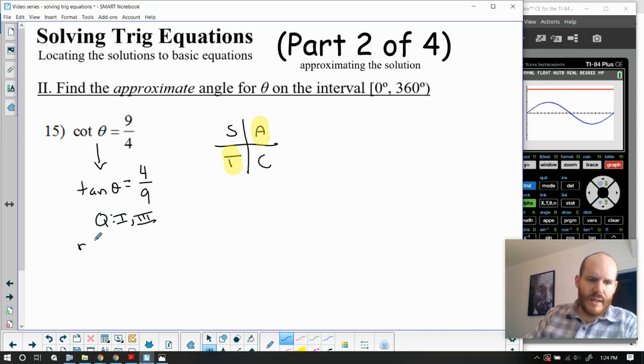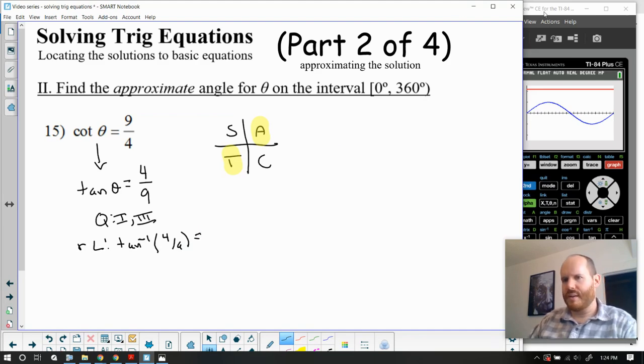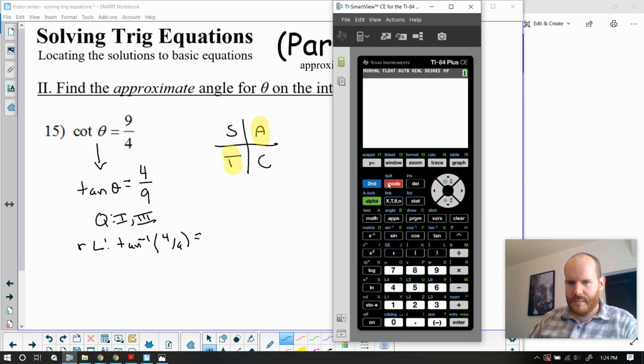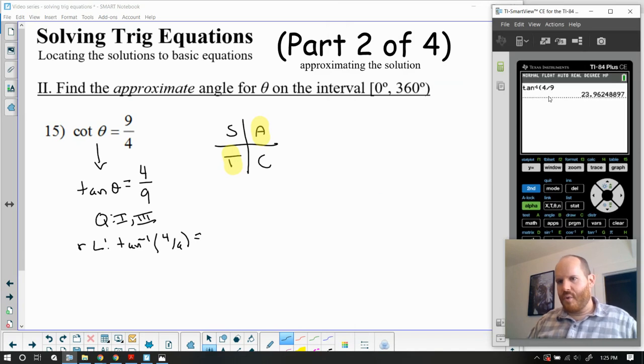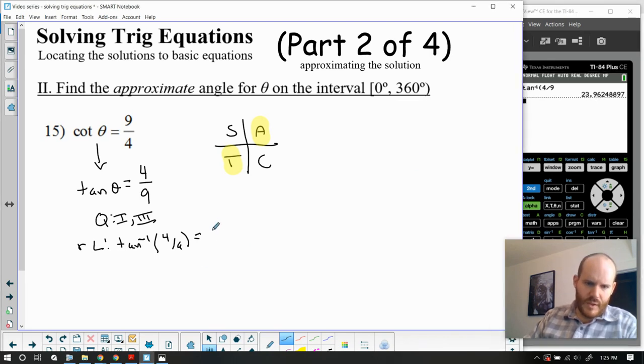And then to get the reference angle, I can use the inverse feature of the calculator. So tan inverse of that ratio, 4/9ths, should give me that reference angle. So I'm going to go back to the calculator. I'm going to quit the graph. I'm going to clear this. I'm going to do second tan inverse of 4 divided by 9. You get 23.96 degrees. Now if I'm rounding that to the nearest tenth, I'm going to have a cascade. So 6 is going to round this 9 up. So overall, this will round to 24 degrees. That's my reference angle.